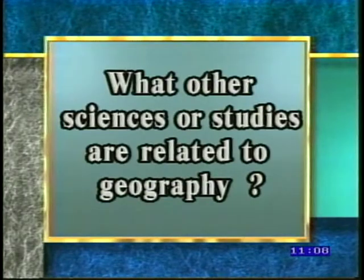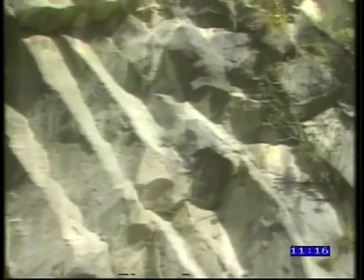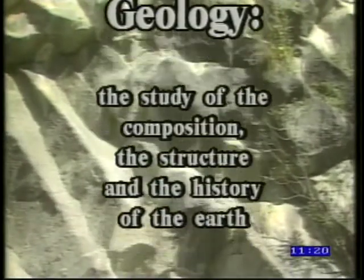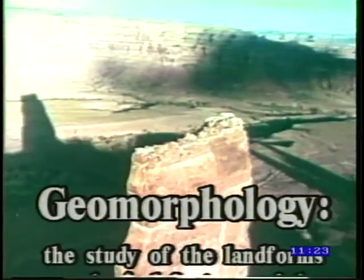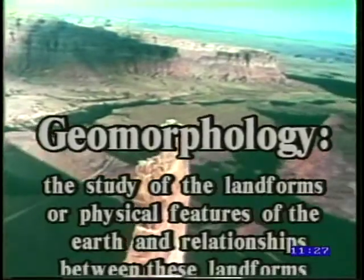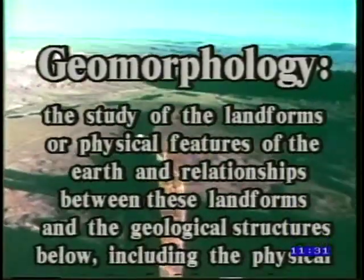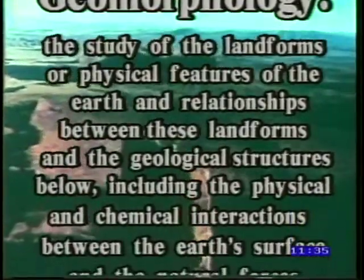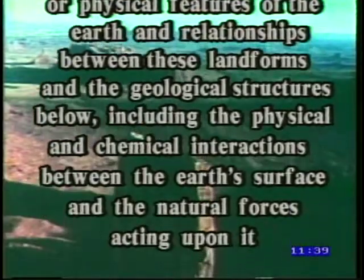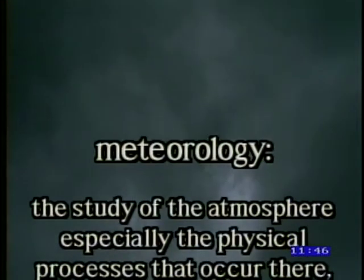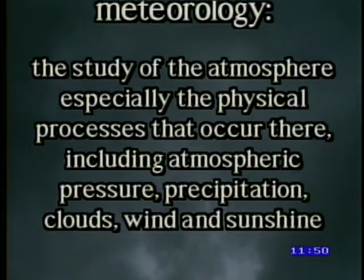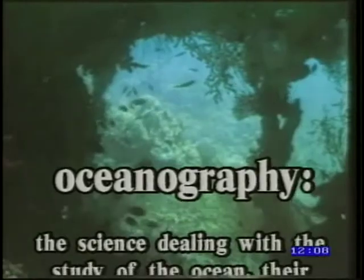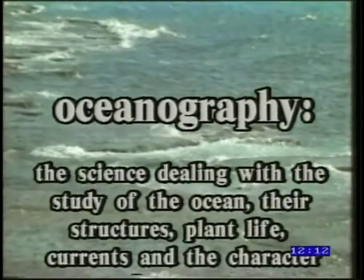What other sciences or studies are related to geography? Other sciences that relate or overlap with the study of geography include geology, which is the study of the composition, structure, and history of the earth. Geomorphology is the study of the landforms or physical features of the earth and the relationships between these landforms and the geological structures below, including the physical and chemical interactions between the earth's surface and the natural forces acting upon it. Meteorology is the study of the atmosphere, especially the physical processes that occur there, including atmospheric pressure, precipitation, clouds, wind, and sunshine. And oceanography is the science dealing with the study of the oceans, their structures, plant life, currents, and the character of seawater.